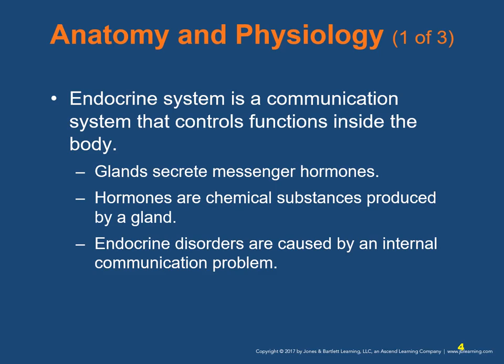Let's discuss the anatomy and physiology. The endocrine system is a communication system that controls functions inside the body. Endocrine glands secrete messenger hormones — chemical substances produced by a gland that travel through the bloodstream to end organs, tissues, or cells that they affect. When the message arrives, an action takes place. Endocrine disorders are caused by an internal communication problem.